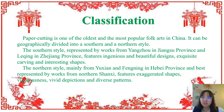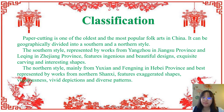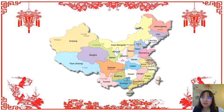The southern style — 南方 — is represented by Yangzhou in Jiangsu Province. 江苏省，扬州市为代表。The northern style — 北方 — is represented by 陕西 Province. This is a map of China. 中国地图。